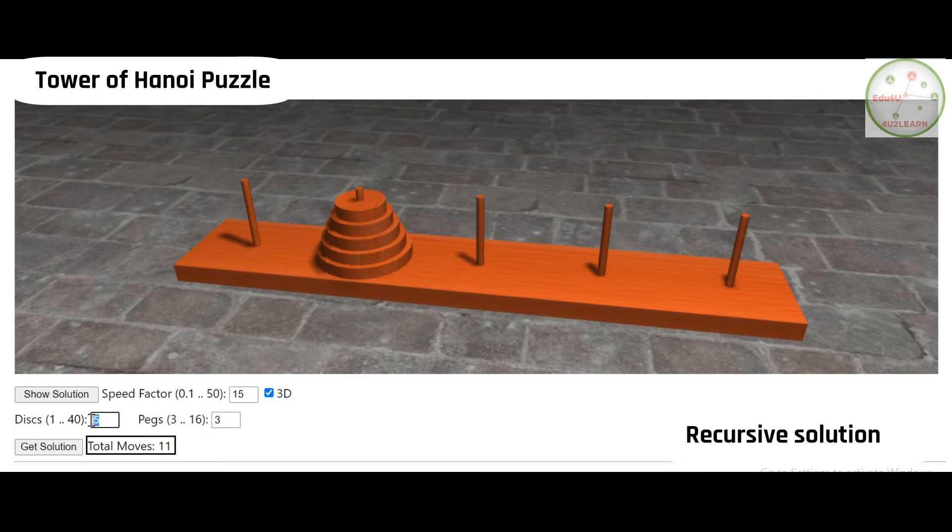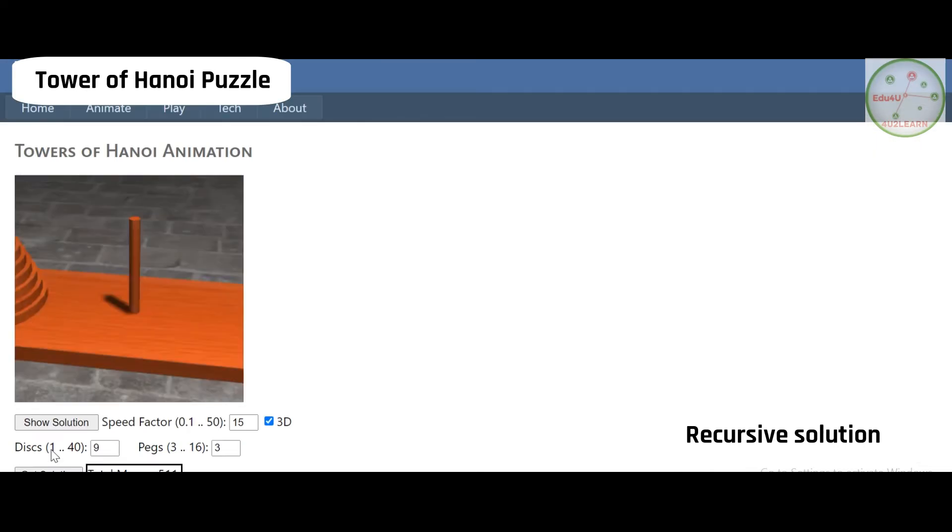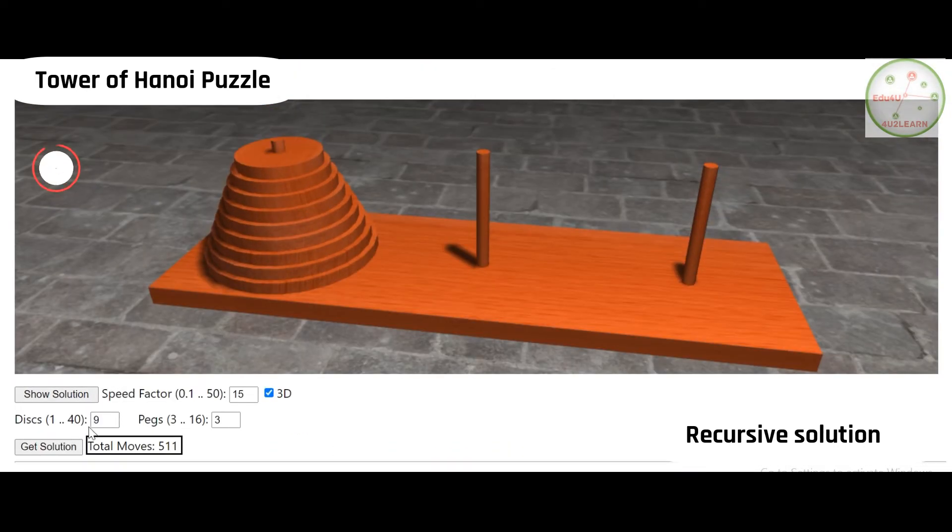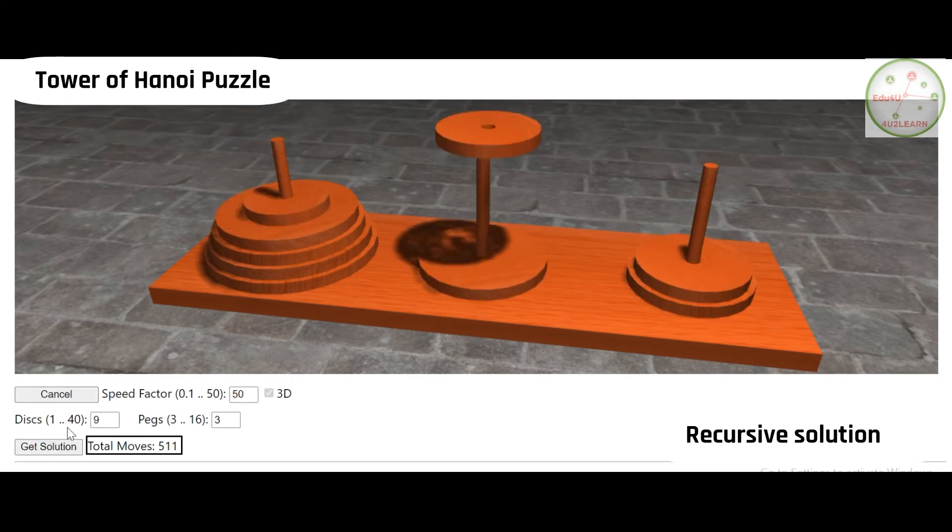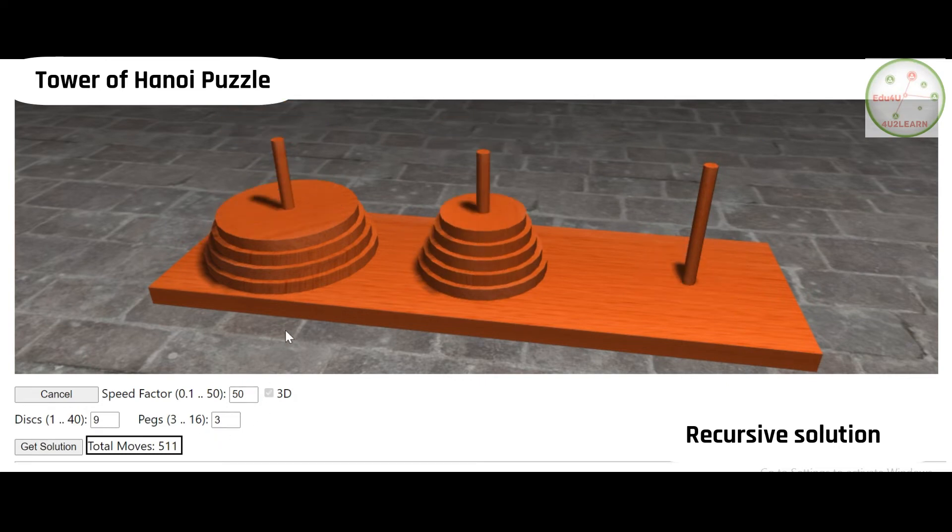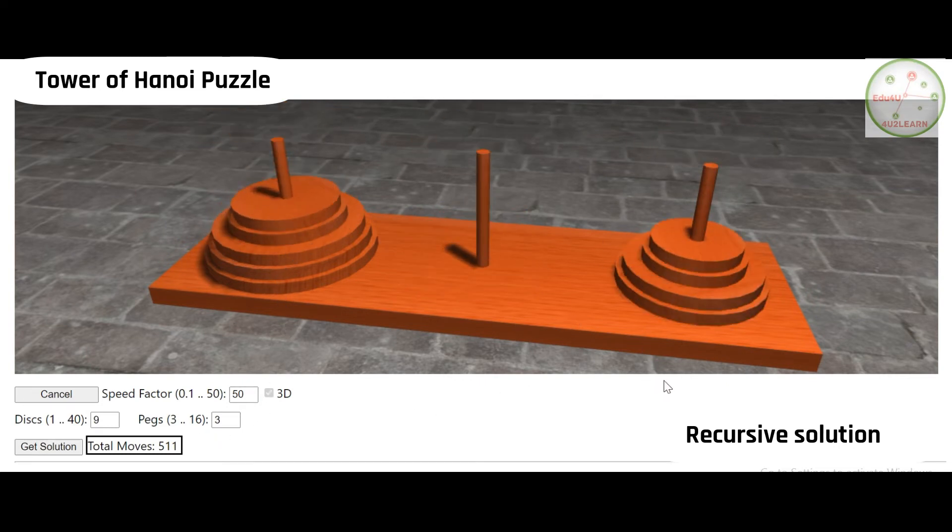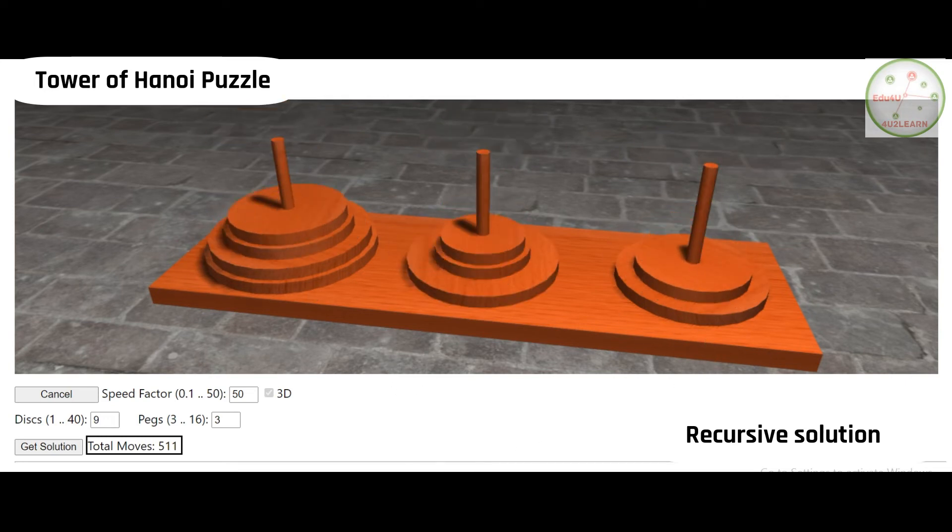We have already seen with three it was seven and with five it was 31. Now we will just look into with nine discs. When it is going to be nine disks, look at the number of moves which are taking place, it is 511. So as the size increases, the number of discs increases, the duration, the time duration for transferring from one stand to another also increases. The number of moves also increase.